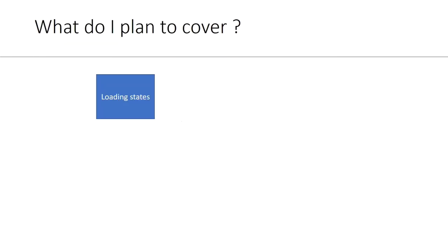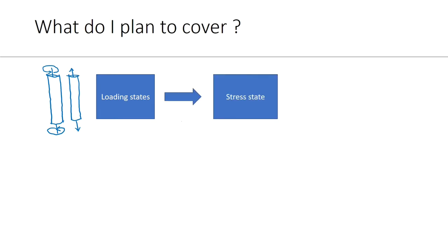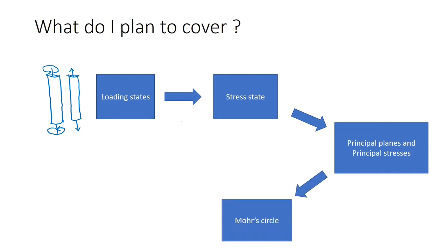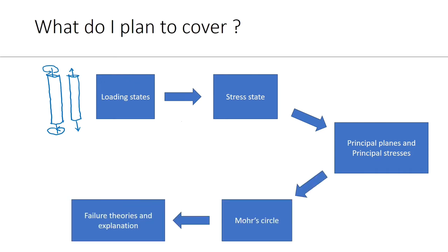My idea is to start with the loading states and explain what a stress state is in a very simple way, and we'll derive the stress state for one of the cases. I'll give insights into what principal planes and stresses are and why we need to care about this. Then I'll briefly explain the Mohr circle, and finally we'll go to the explanation of failure theories and answer the question.